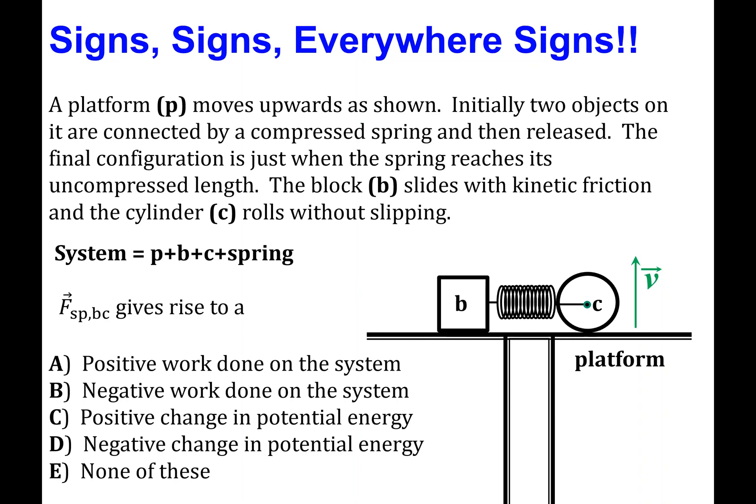If we look at options A and B, positive work done on the system, negative work done on the system, these both are referring to forces external to the system and acting on the system from the outside. Clearly, that's not the case with a spring because it's part of the system. We can rule out A and B.